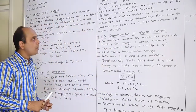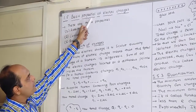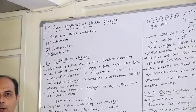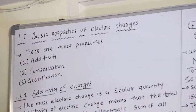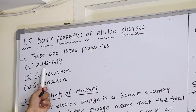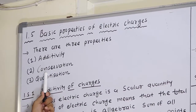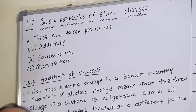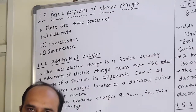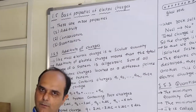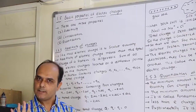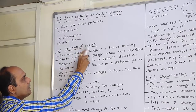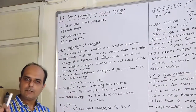Today our next topic is the basic properties of electric charges. There are three basic properties. The first property is called additivity, the second property is called conservation, and the third property is called quantization. Now we are taking the first property — that is the additivity of the charges.